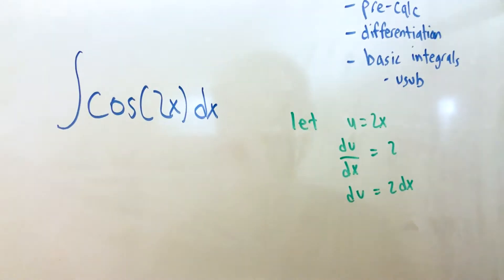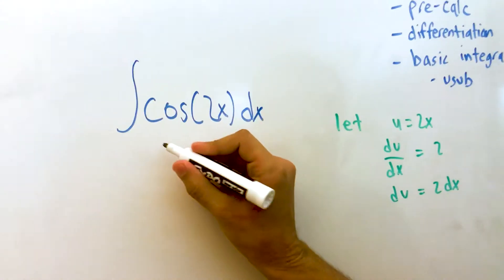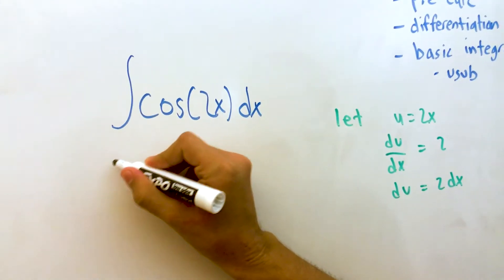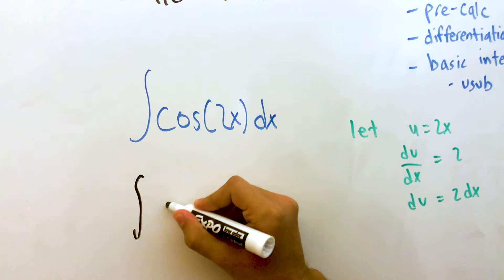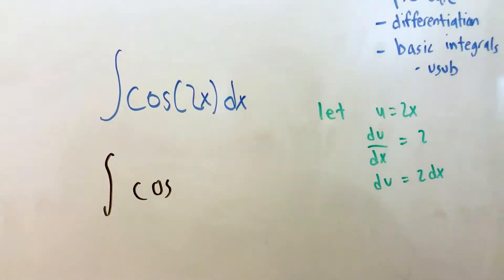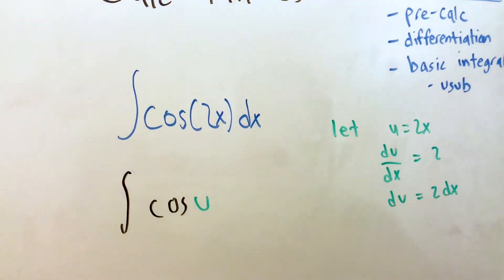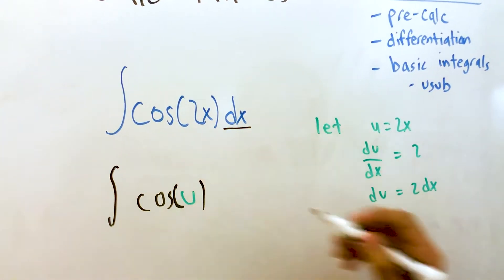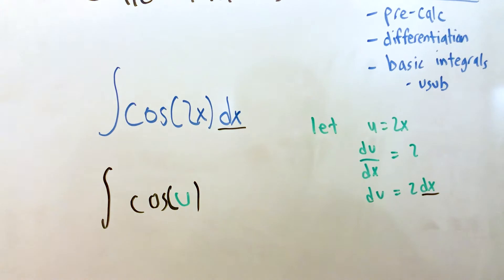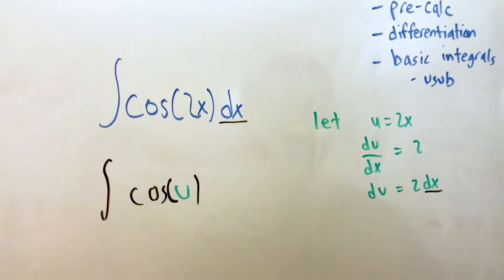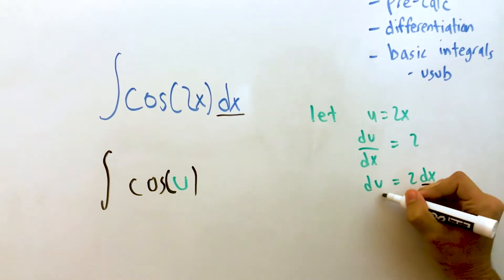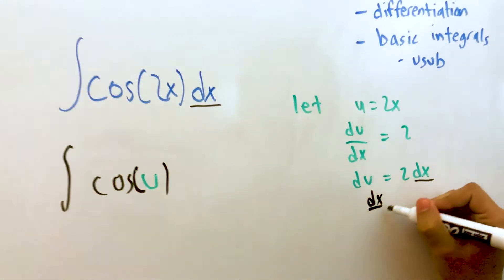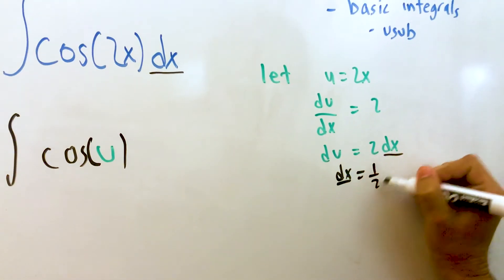All right, so I'm going to plug these guys into this integral. So now this becomes cosine of U times dx. Well, dx is going to be 2, but notice how I have to divide by 2. So dx is actually going to be 1 half du.